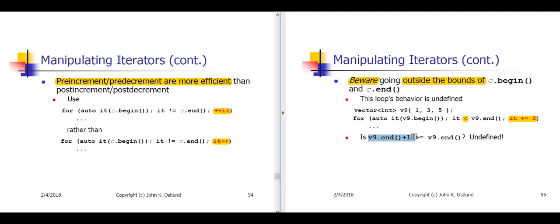Is v9.end plus 1 going to be greater than v9.end? Well, once you're outside the bounds from begin through end, all bets are off. It's undefined whether the value of v9.end plus 1 is greater than or equal to or less than v9.end. So you could accidentally create for yourself here an infinite loop, or you could crash.